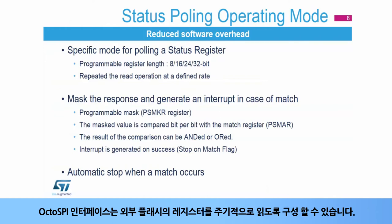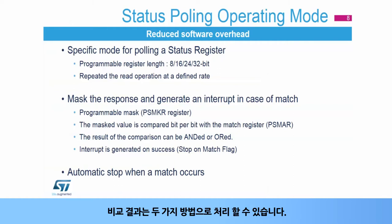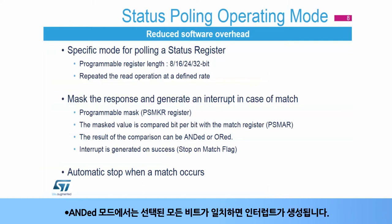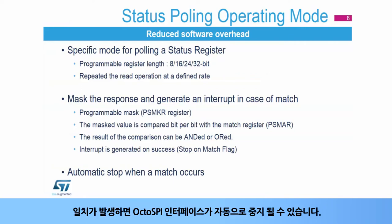A specific mode has been implemented in the OctoSPI interface to autonomously poll status registers in the external flash. The OctoSPI interface can be configured to periodically read a register in the external flash. The return data can be masked to select the bits to be evaluated, and the selected bits are compared with their required values stored in the match register. The result of the comparison can be treated in two ways: in ANDED mode, if all the selected bits are matching, an interrupt is generated; in OR mode, if one of the selected bits is matching, an interrupt is generated. When a match occurs, the OctoSPI interface can stop automatically.